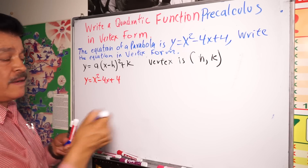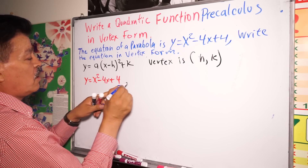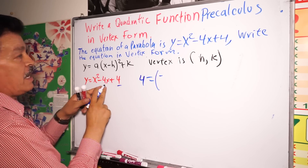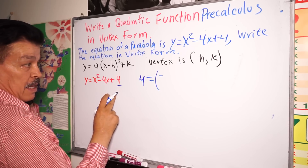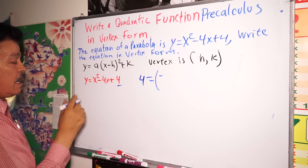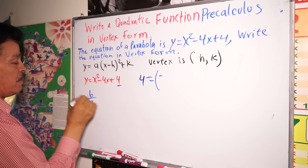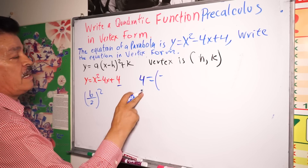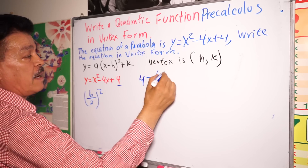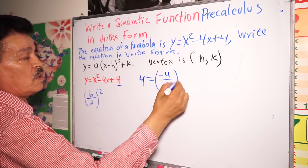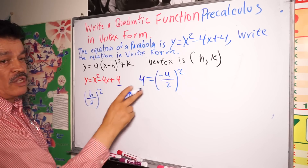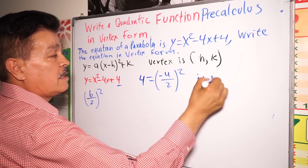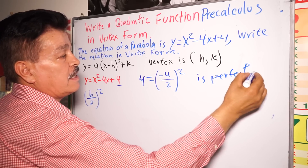You have 4 here. Look at this — what is b? Remember the formula: b divided by 2 to the second power. So b is minus 4, divided by 2, to the second power. So this is a perfect square — it's a perfect square. The coefficient is perfect. A half of the linear coefficient squared equals the constant. That's why.